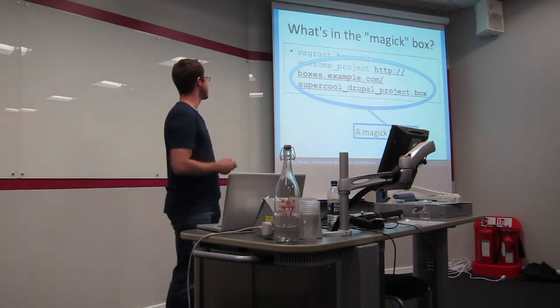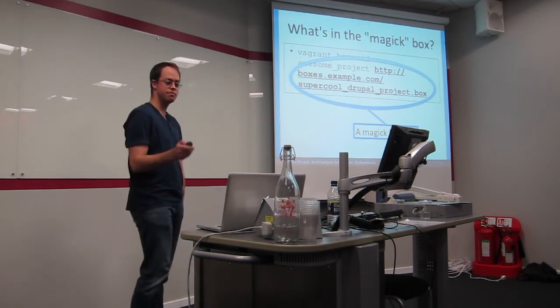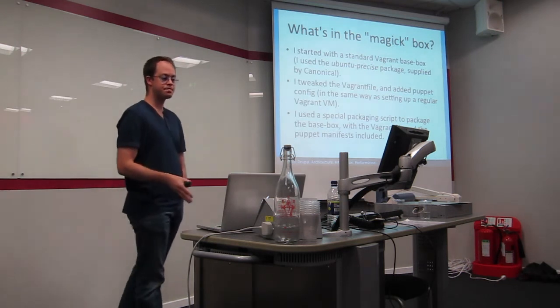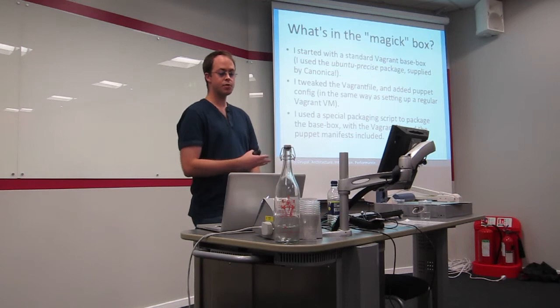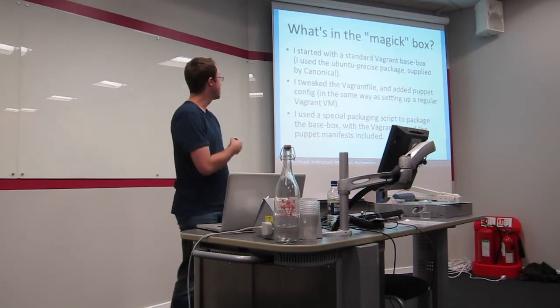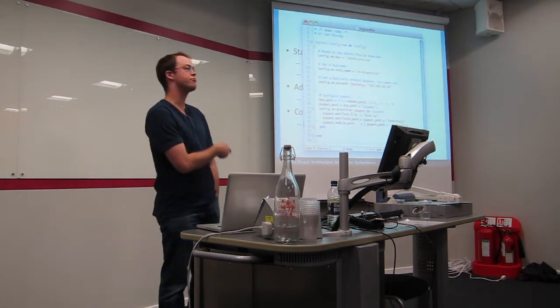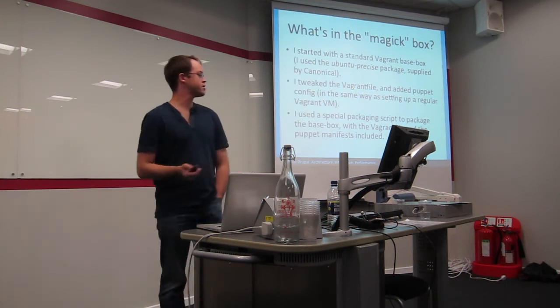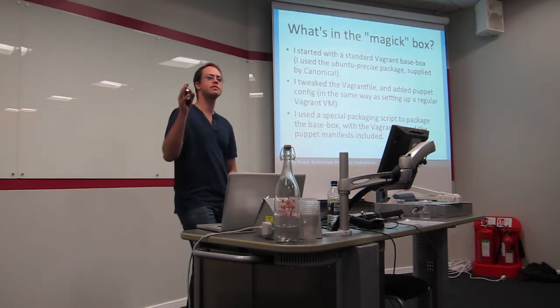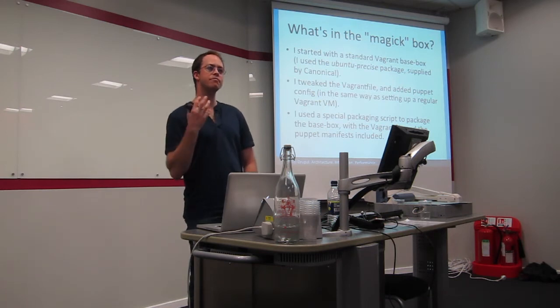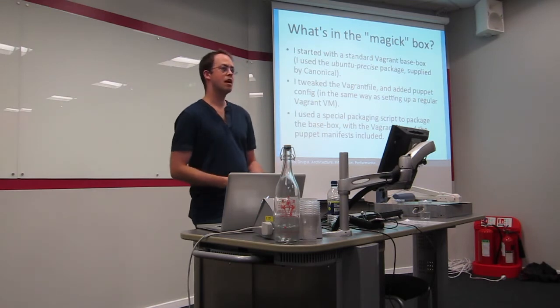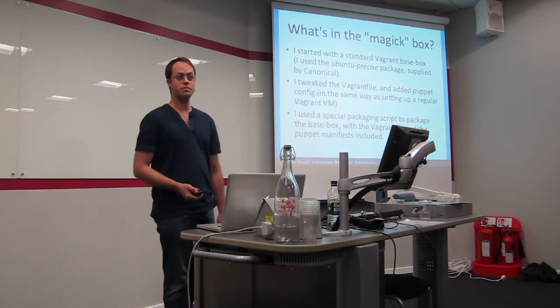So I'll tell you a little bit about that in a bit. So if we were to talk about this magic box, and I've got a URL for the one that I'm using shortly. I start with getting a standard Vagrant build. I used Ubuntu. I tweaked the Vagrant file and added the Puppet config. So that is literally what I entered for my Vagrant file. And then I used a special packaging script that took the Puppet manifests, the Puppet modules, the Vagrant file, and the original base box that I built, and merged them all together into one box. And so that means that with one box, you get absolutely everything someone needs. That gives you one command to start up a new instance.